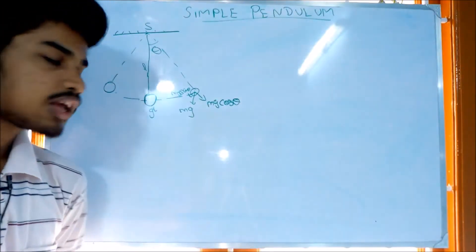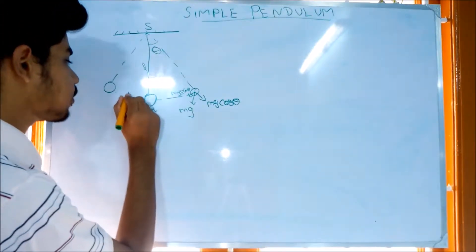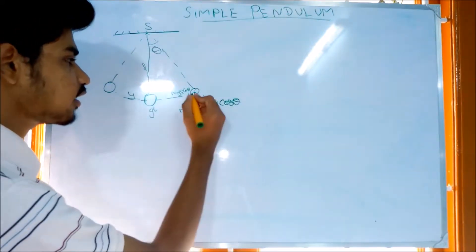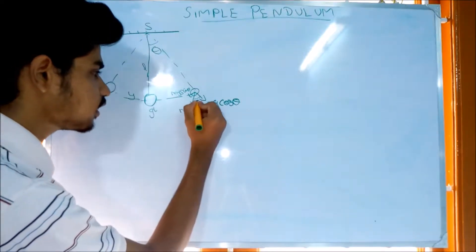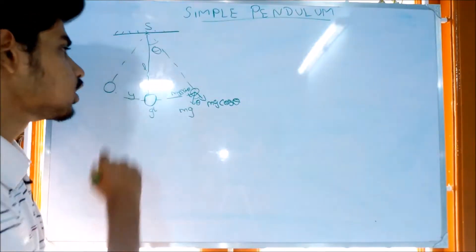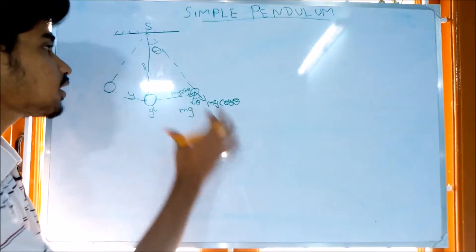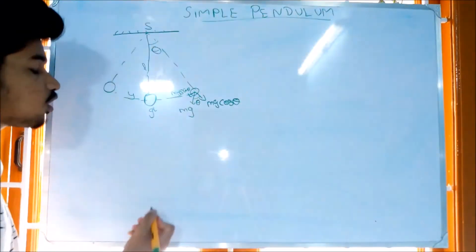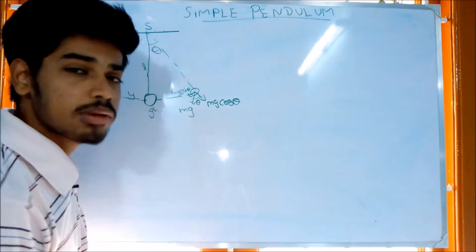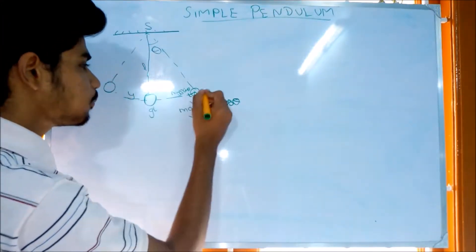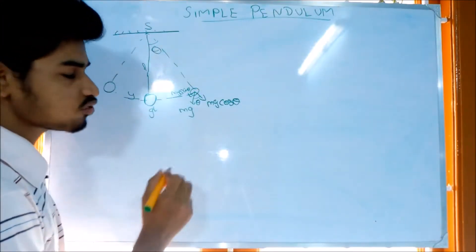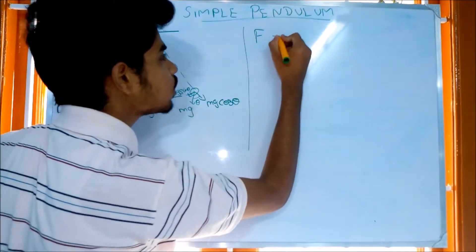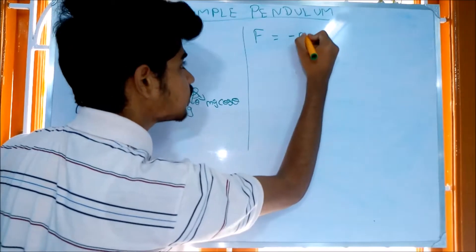The path is the displacement, so the displacement is y. If you see the theta, this is the simple path here. We calculate the force — what is the force? It is the restoring force. You can see the restoring force acting here.